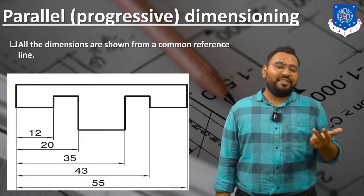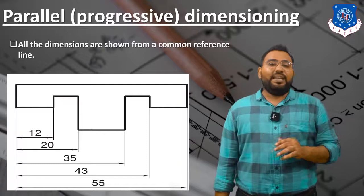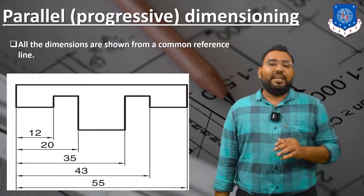In this video we have seen what is dimension, the different types of dimensioning methods, aligned system, unidirectional system, chain dimensioning, and parallel dimensioning. In the next video we are going to see what is scale. I hope you liked this video. Have a nice day, bye.